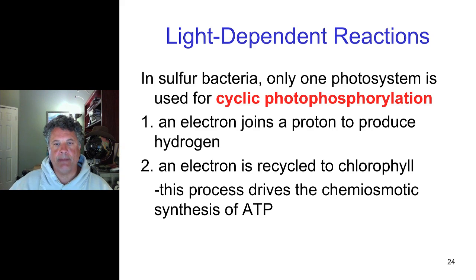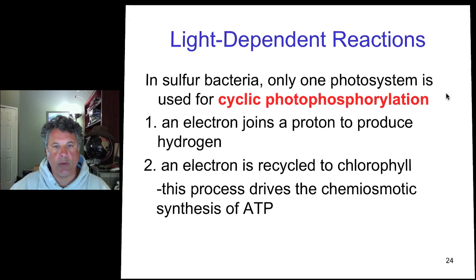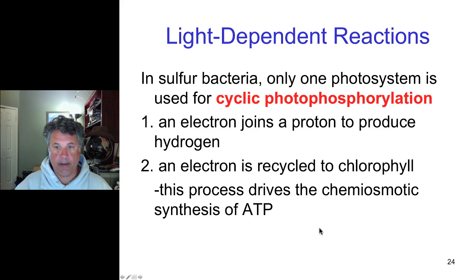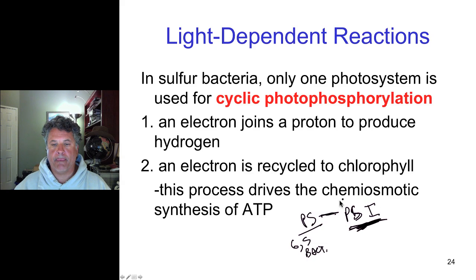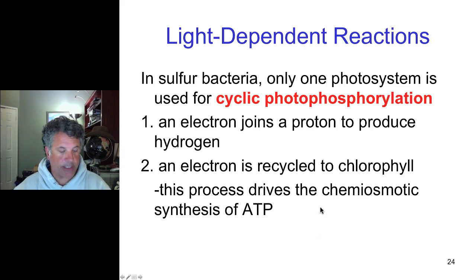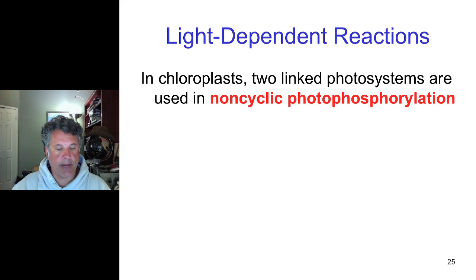Now it's time to move on to the main types of photosynthesis, in which chloroplasts of plants conduct two linked photosystems. The photosystem of the green sulfur bacteria has homology to photosystem I found in chloroplasts of higher plants. Now we're going to look at non-cyclic photophosphorylation in chloroplasts, where two linked photosystems — homologous to the cyclic photosystems we looked at previously — carry out non-cyclic electron transfer.